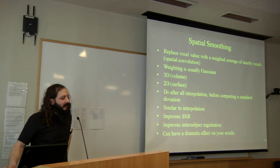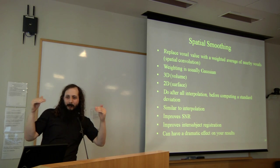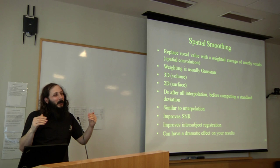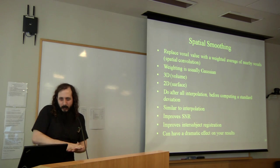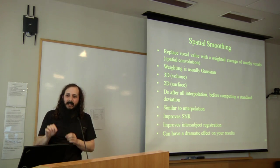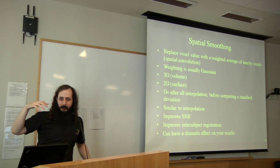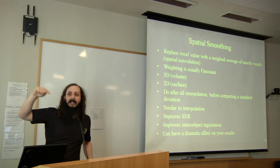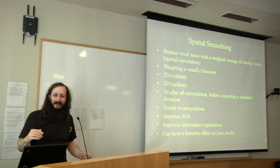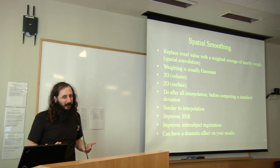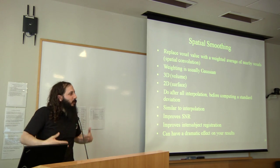Spatial smoothing can have a dramatic effect on your results and should be done with care. It's important to look at results before and after smoothing to understand its effects. We typically convolve images with an isotropic Gaussian kernel, normalized so it sums to one. The amount of smoothing is characterized by the full width at half maximum (FWHM). As we apply progressively larger smoothing kernels, a lot of the noise in the image decreases, but a lot of anatomical features are lost as well. A larger FWHM corresponds to more aggressive smoothing.